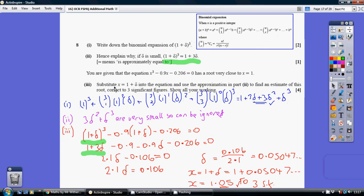Now, for part 3, we're being asked to substitute x equaling 1 plus delta into this equation here. So we're going to, rather than x cubed, we're going to have 1 plus delta all cubed, minus 0.9 times 1 plus delta, and so on. So that's just substituting straight in here.